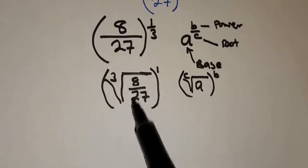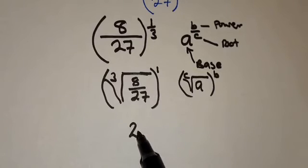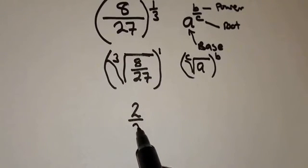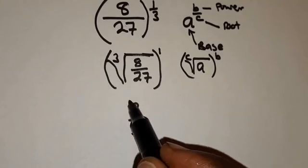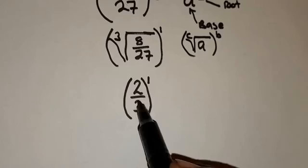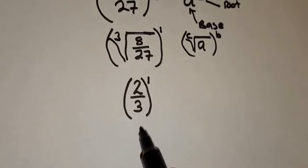So the cube root of 8 is 2 because 2 times 2 times 2 is 8. Then the cube root of 27 is 3 because 3 times 3 times 3 is 27. Then everything is being raised to the power 1. Any number raised to the power 1 is just that number. So the answer is 2 over 3.